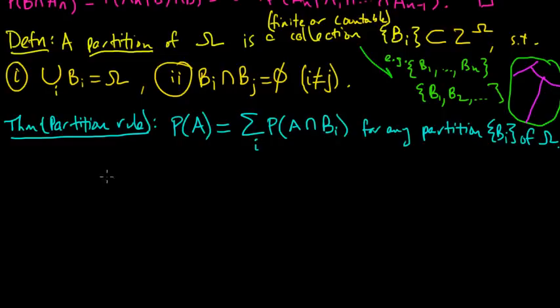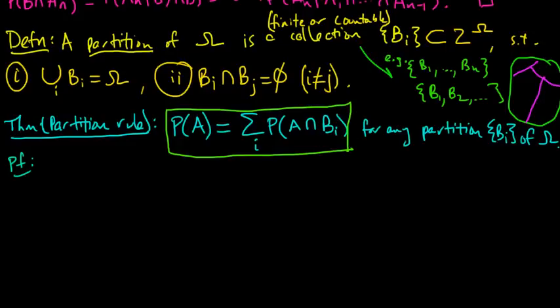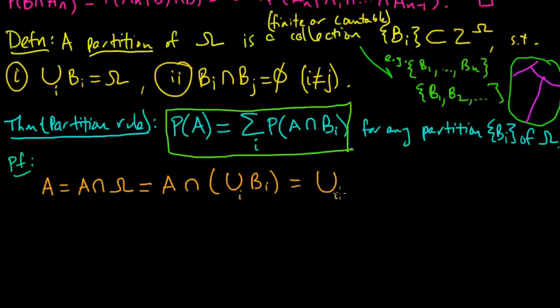So this also will come up later in random variables in the context of what's called marginalization. So let's prove this. It's pretty simple to prove. So what's the proof? Well, A we can write as—we can always take the intersection with omega. Omega is the whole space, and A is just a subset of omega. So A equals its intersection with that. And omega we can rewrite by this property as the union of the bi's in our partition. And by a set property, one of the properties of sets, we can move this intersection in. It sort of distributes over the union. And we get the union over I of A intersect bi. So that's a first observation.